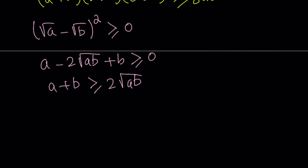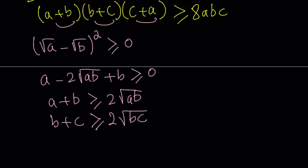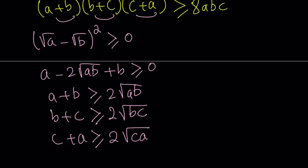I got this for A and B, but I can also do it for B and C, and for C and A. Notice that A plus B appears here and the others appear next to it, so it makes sense to multiply them together. By the same inequality, B plus C is greater than or equal to 2√(BC), and C plus A is greater than or equal to 2√(CA).